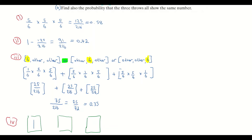Now looking at the other two dice: assume I got a three on the first go. I then need to get the same answer on the second dice. The probability of getting a three on the second dice is 1/6 since there's only one three on the dice. I roll the dice again and again want to get a three — that's also 1/6. So multiplying: 1 × 1/6 × 1/6 gives me 1/36.